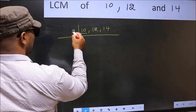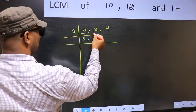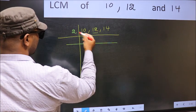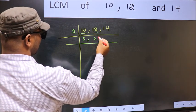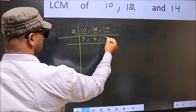10 is 2 5s, 10. The other number 12. When do we get 12 in 2 table? 2 6, 12. The other number 14. When do we get 14 in 2 table? 2 7s, 14.